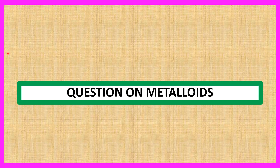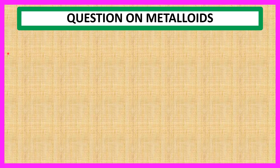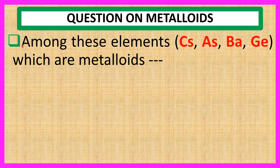Welcome everyone, question on metalloids. Among these elements such as cesium, Cs, arsenic, As, barium, Ba, and germanium, Ge — which are metalloids?